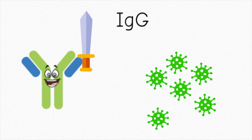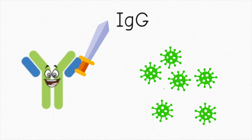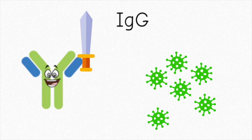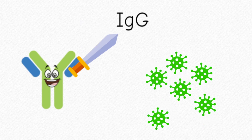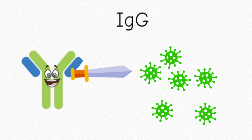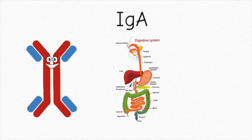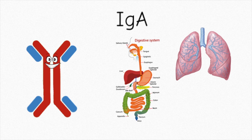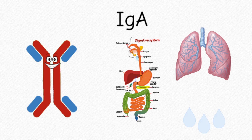I, IgG, am found all throughout the body. I help fight bacterial and viral infections. IgA is found in mucous membranes of the GI and respiratory tracts. It's also found in saliva and tears.